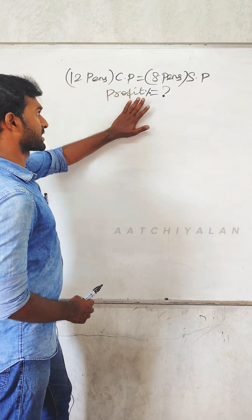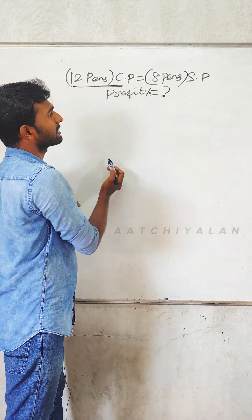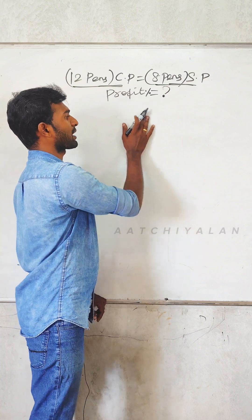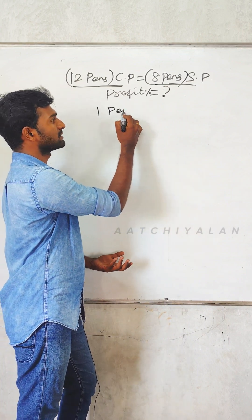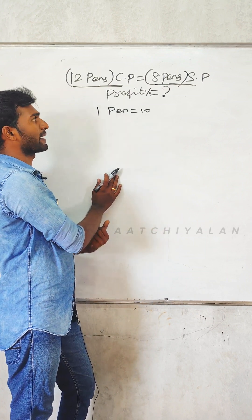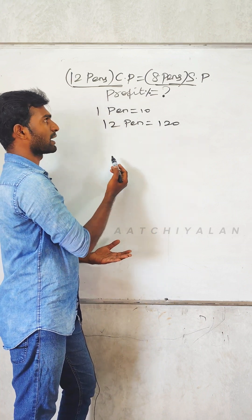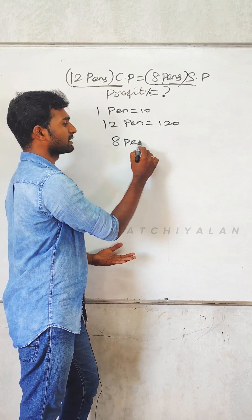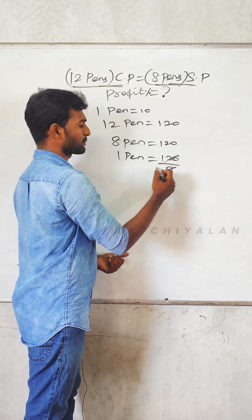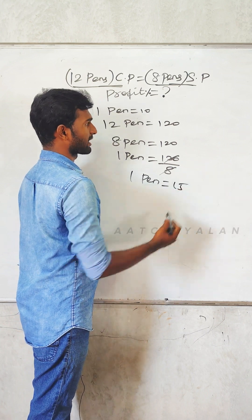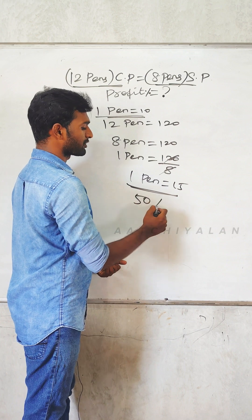12 pence cost price is equal to 8 pence selling price. Let's say that profit percentage. If the value of 10 is equal to 10, then the value of 10 pence is equal to 100. The value of 8 pence is equal to 100. So the rate is 120 by 8. If you add the price, it is 15. It will be 50% profit.